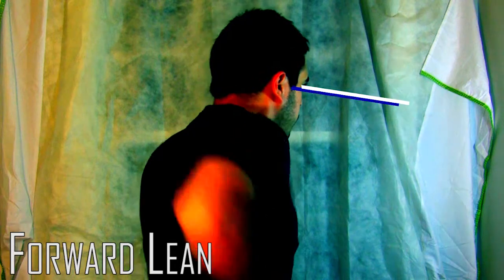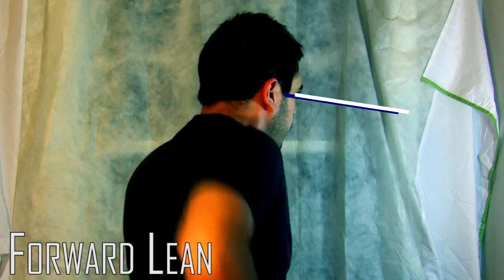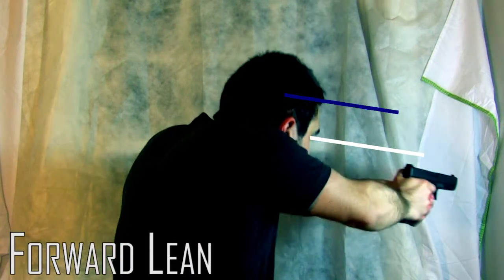Now, the forward lean is something of an exaggerated isosceles stance. The problem is not the stance, the problem is that many people begin this action by standing completely upright and then go for the gun and then lean forward.